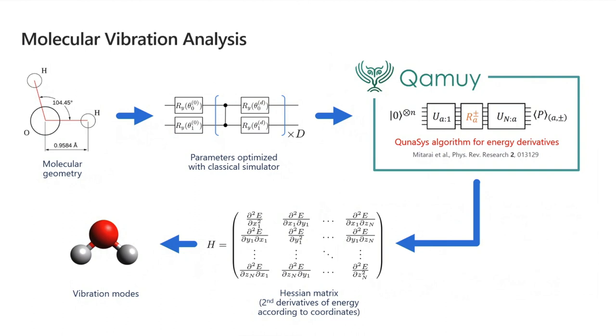Once you've found those optimal parameters and you can program now your qubits to look like the water molecule, the job's not done. You still need to measure something on this molecule to extract the vibrational energies. In this case, what you're after is something called the Hessian matrix, which has derivatives of the energy with respect to the position of these two atoms in the molecule. And CUNYSIS developed an algorithm that measures these energy quantities and populates that matrix.